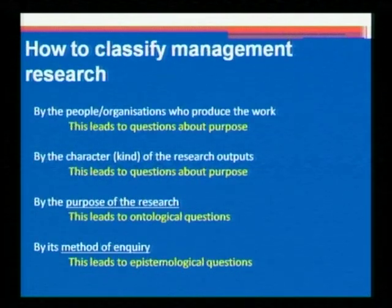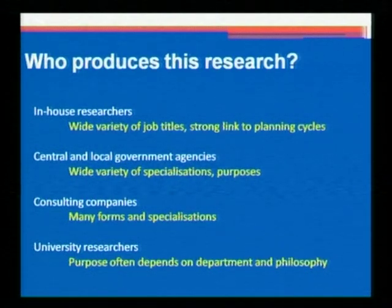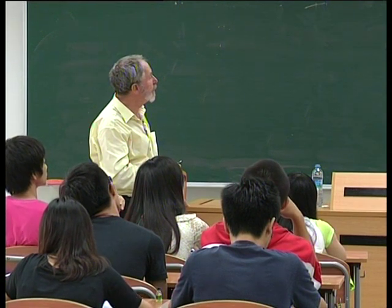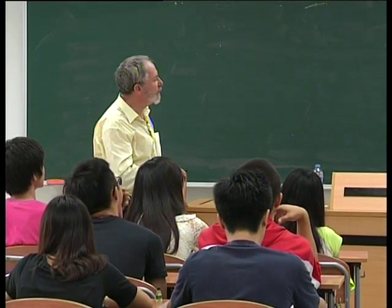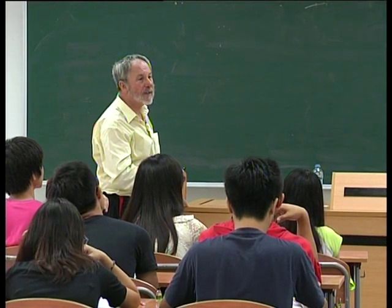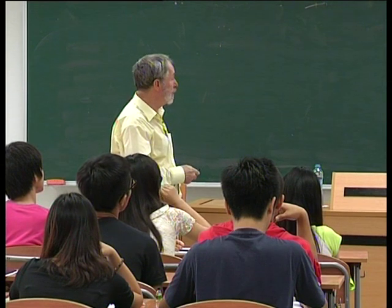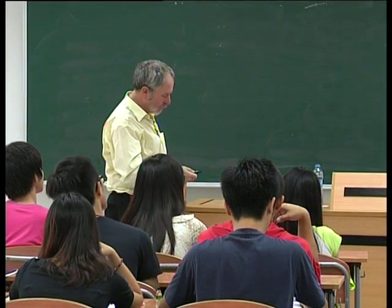The first classification: by the people and organizations who produce the work. A lot of research is produced by in-house researchers — companies and government agencies have their own research departments, with a wide variety of job titles and strong links to planning cycles. Then there are central and local government agencies. Consulting companies are another source, and many of you might wish to work in one. And finally, university researchers in different departments produce this kind of research too.